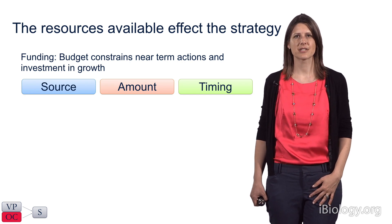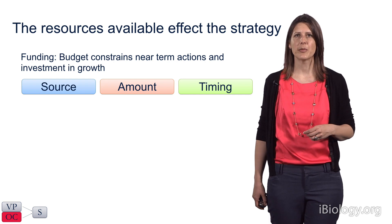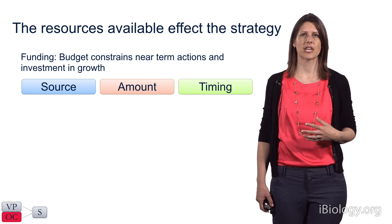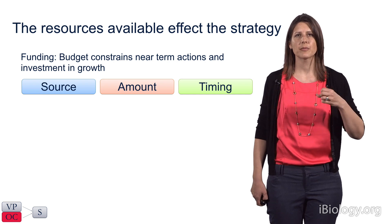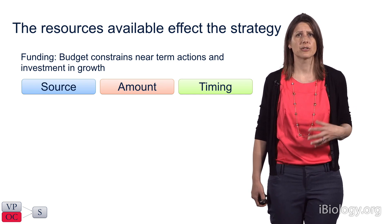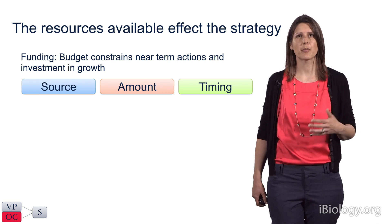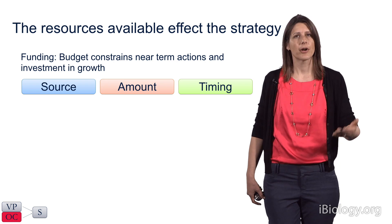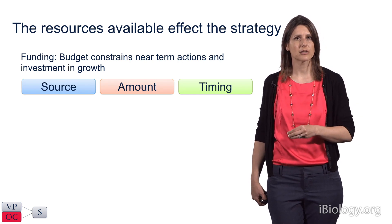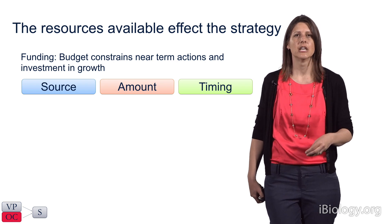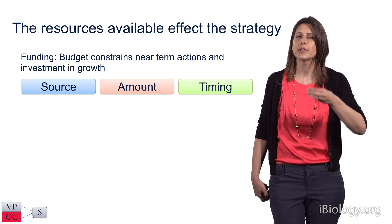Third, we'll talk about the resources available to the enterprise and how that affects the strategy it can pursue. I've broken this into two areas: funding and organizational capabilities. Both act as constraints on the types of strategies that can be pursued. Funding refers to the budget available for near-term actions and growth investment, broken into three areas: the source of funding (public or private), the amount, and the timing — whether money is coming in six months or can guarantee three to five years of work.